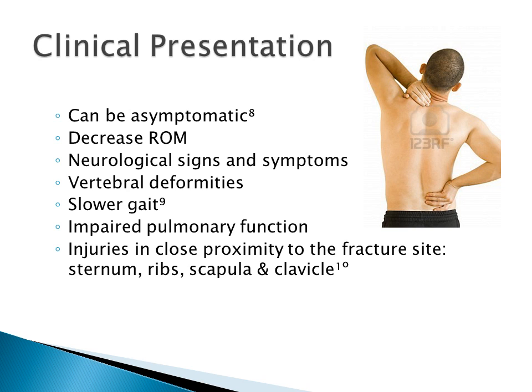Your patient may present asymptomatic, or may have some localized tenderness, decreased range of motion, neurological signs and symptoms, slow gait patterns, vertebral deformities, impaired pulmonary function, and chronic back pain. Your patient may also present with injuries in close proximity, such as sternal, scapular, rib, or clavicular fractures.